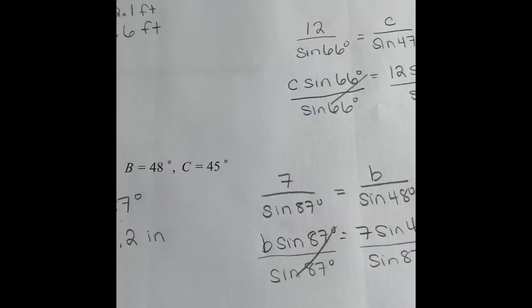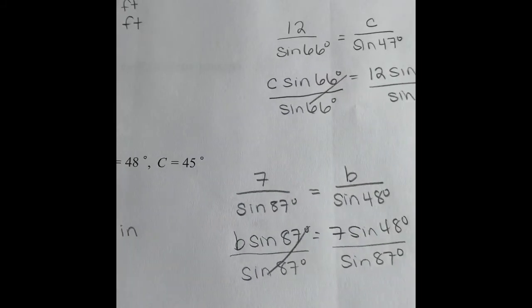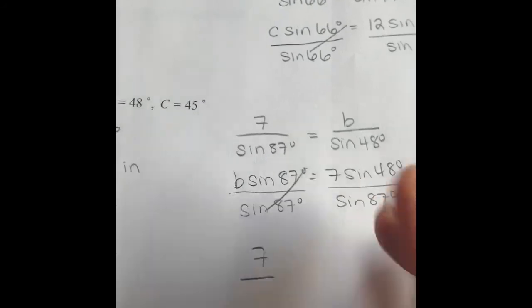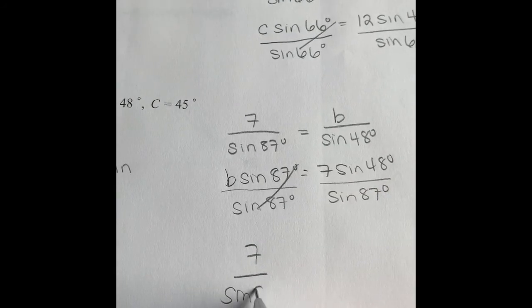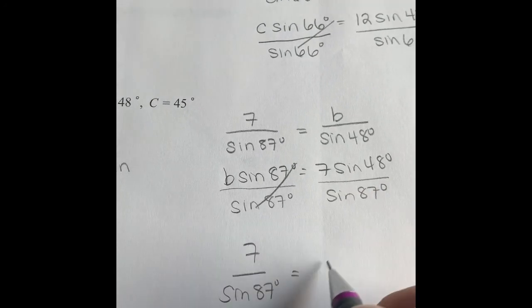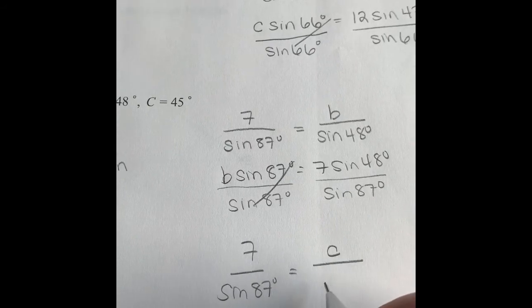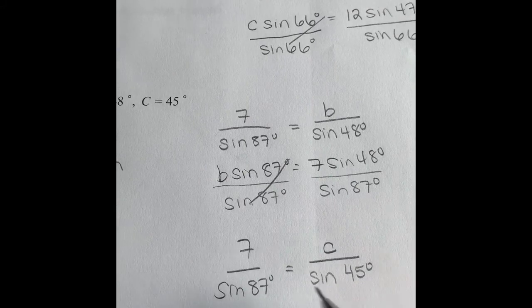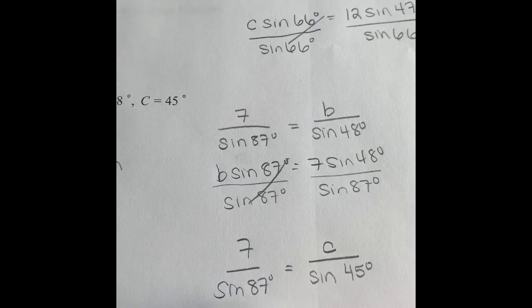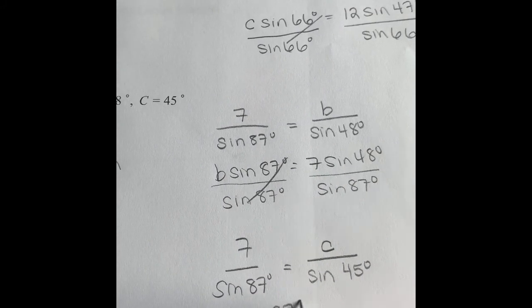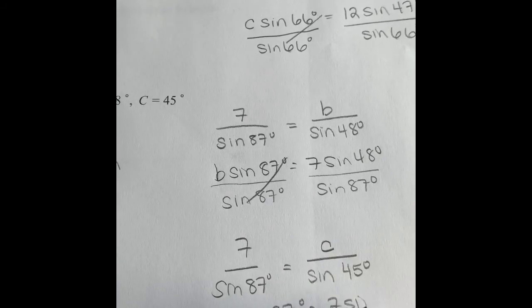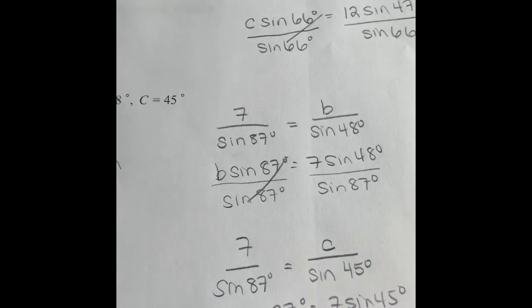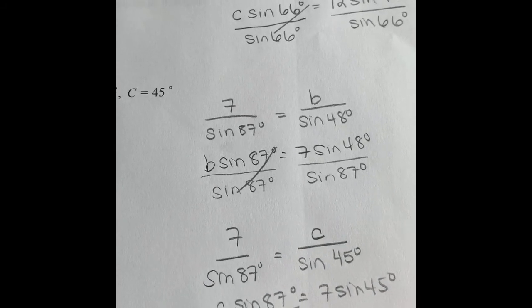Doing the same thing for side C, we're going to use side A again. So 7 over sine of 87 degrees. This time we're finding side C. We're going to divide that by the sine of angle C, which they told us was 45 degrees. Cross multiply and divide by the sine of 87 degrees to get our answer.